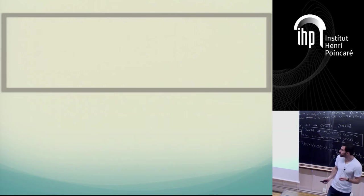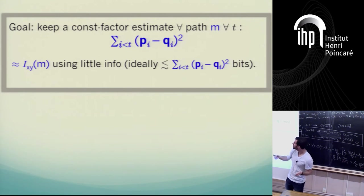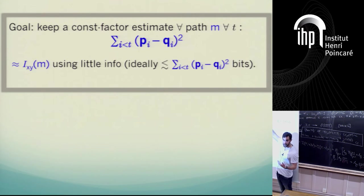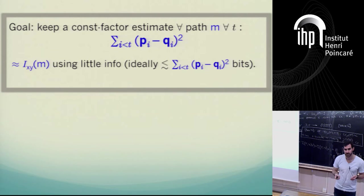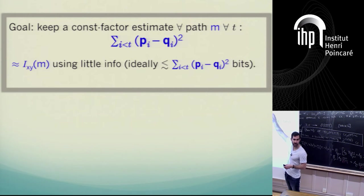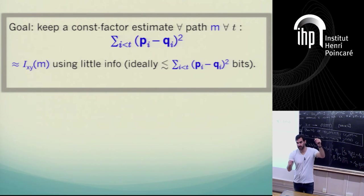So assuming all bits throughout the protocol have a small bias — say between one-third and two-thirds — Pinsker's inequality is essentially tight: the divergence equals (pi_i - q_i)^2. In this terminology, the odometer task is simply to estimate, for each path T and for each point along the path, the information incurred, which up to constant factors is just the sum of the squared differences along this path.